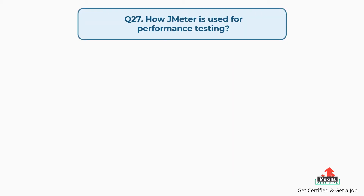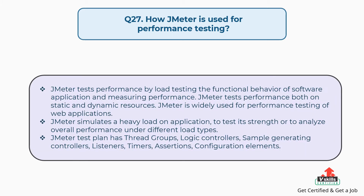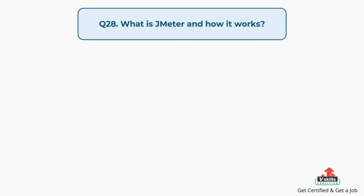Question 27: How is JMeter used for performance testing? JMeter tests performance by load testing the functional behavior of a software application and measuring performance on both static and dynamic resources. The JMeter test plan includes thread groups, logic controllers, sample generating controllers, listeners, timers, parameters, assertions, and configuration elements.